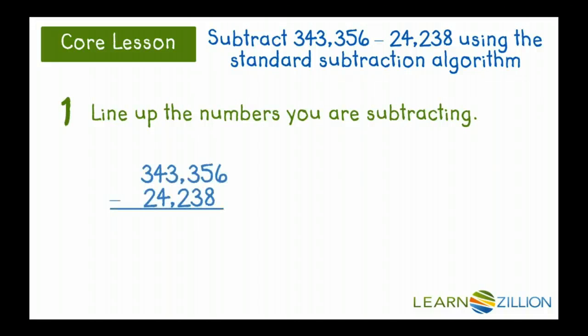Alright, step number one, here we go, let's line up those numbers. So I have 343,356 on the top, 24,238 on the bottom. I'm ready to subtract and then I notice a problem.